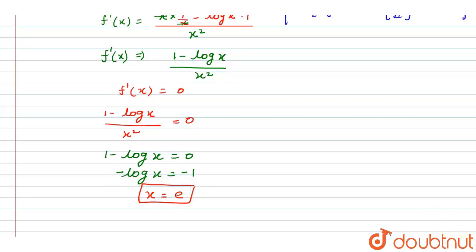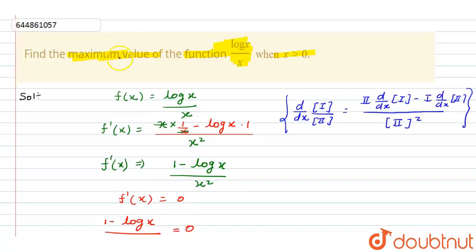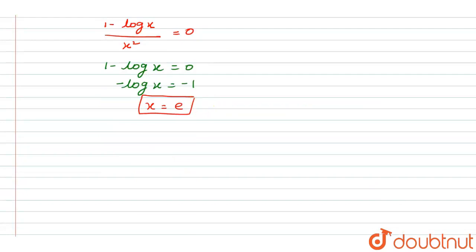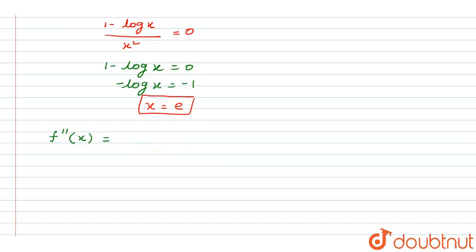Now we need to verify that the function is indeed a maximum at x = e. To do this, we find the second derivative f''(x), applying the quotient rule again to f'(x).